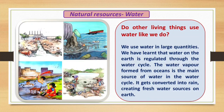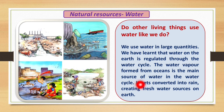The water vapor formed from oceans is the main source of water in the water cycle. It gets converted to rain, creating fresh water sources on earth. The ocean water evaporates, forms clouds, and comes back to us in the form of rain.